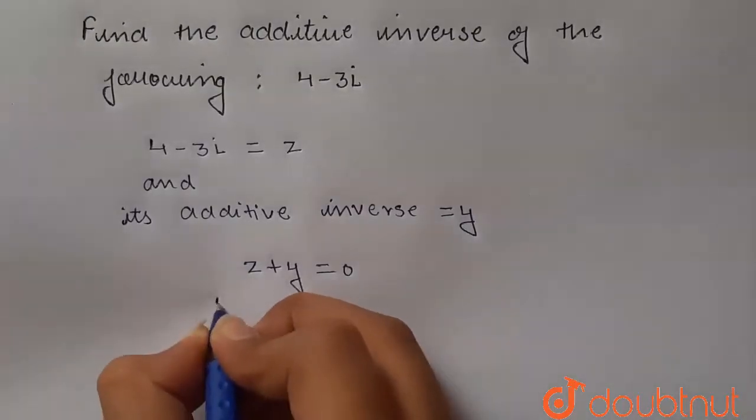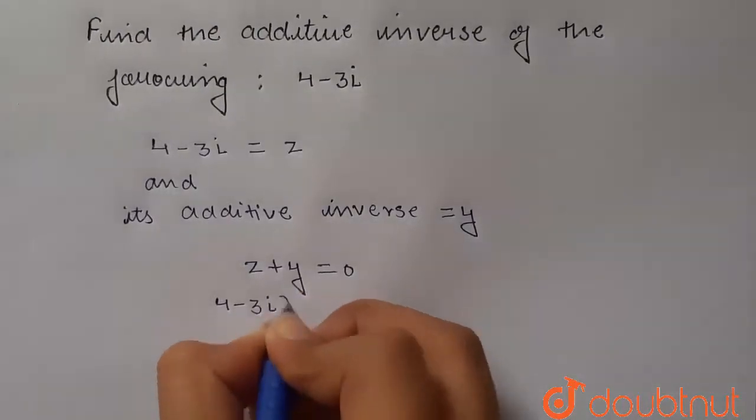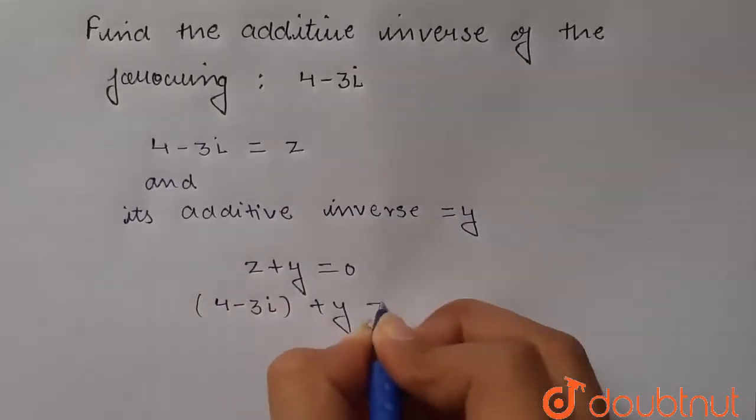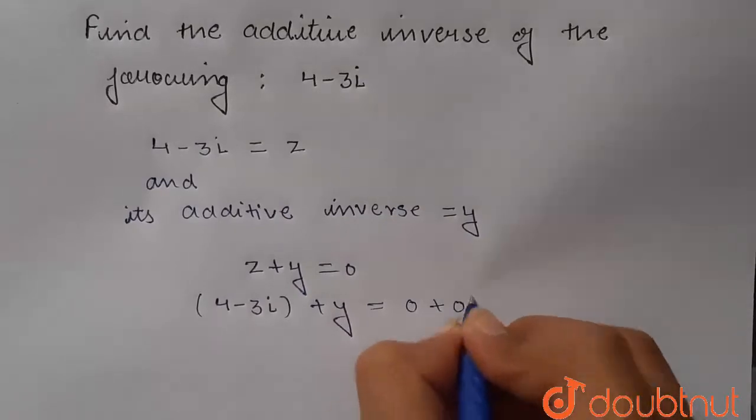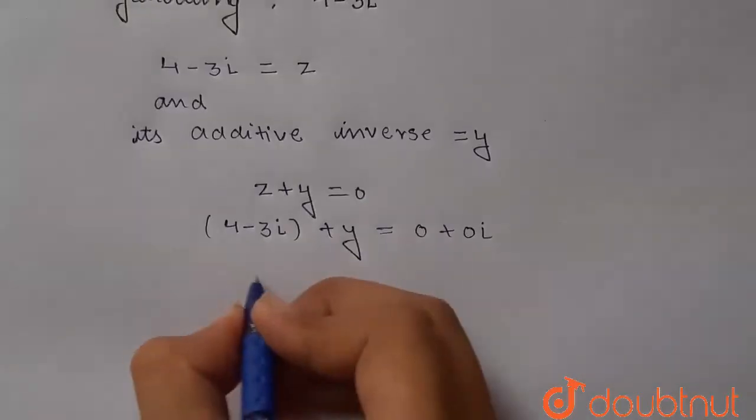Now as this is a complex number, then here it must be written like this: 0 plus 0i. So from here we will get y equal to what?